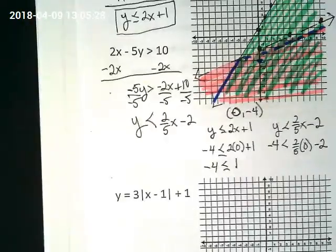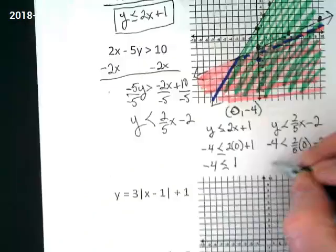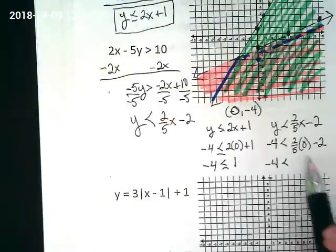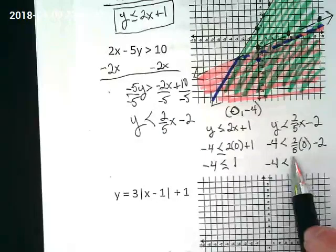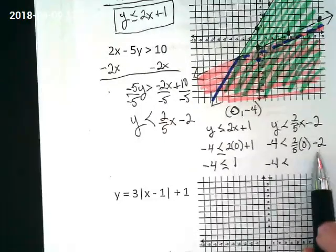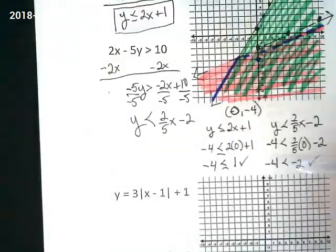If I can, I like to pick an ordered pair that has a 0, because it's easy to multiply by 0. Right? Negative 4, we're checking, is negative 4 less than what's going to be on the other side? Well, 2 fifths times 0 is leaving us with, is this a true statement? Yes. This is true, and this is true.